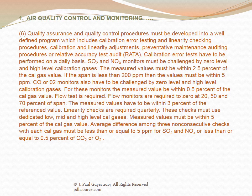Quality assurance and quality control procedures must be developed into a well-defined program, which includes calibration error testing and linearity checking procedures, calibration and linearity adjustments, preventative maintenance auditing procedures, or relative accuracy test audit, abbreviated RATA. Calibration error tests have to be performed on a daily basis. SO2 and NOx monitors must be challenged by zero level and high level calibration gases. The measured values must be within 2.5 percent of the cal gas value. If the span is less than 200 parts per million, the values must be within 5 ppm.